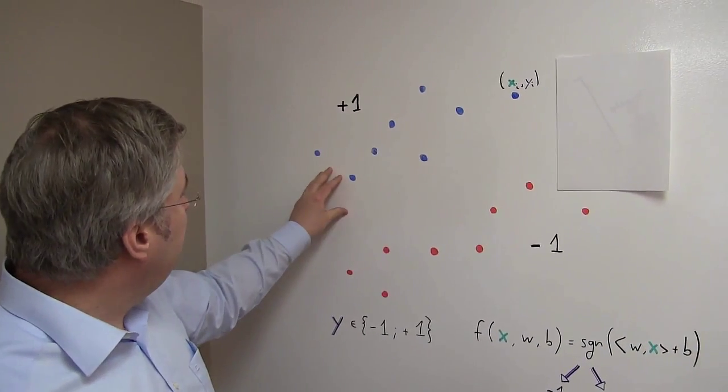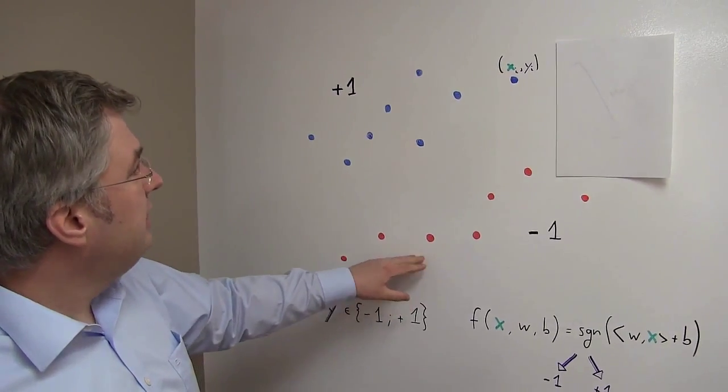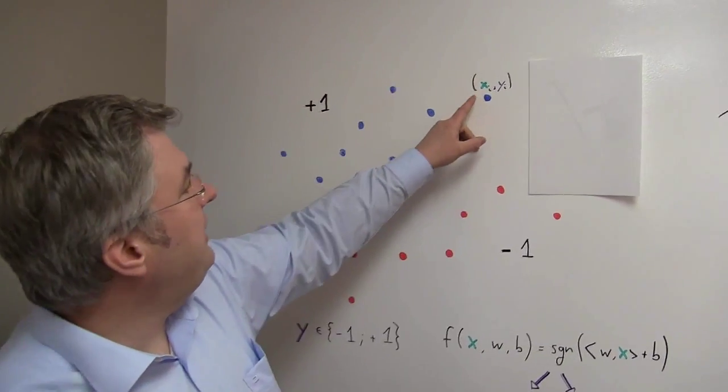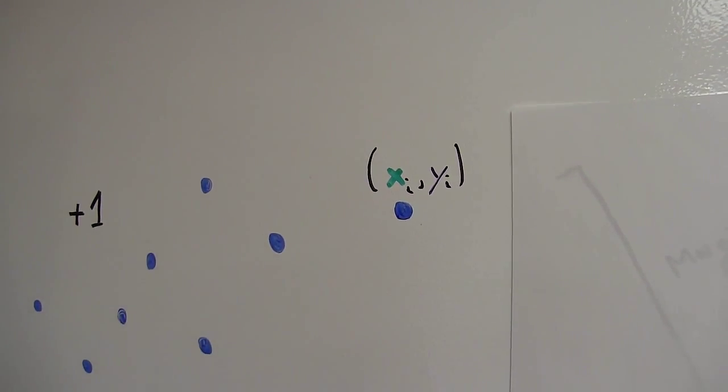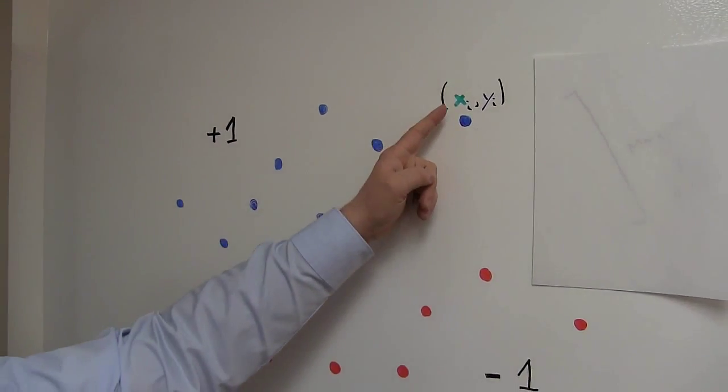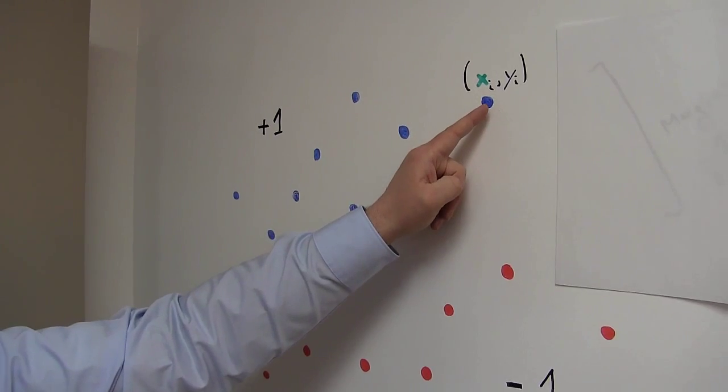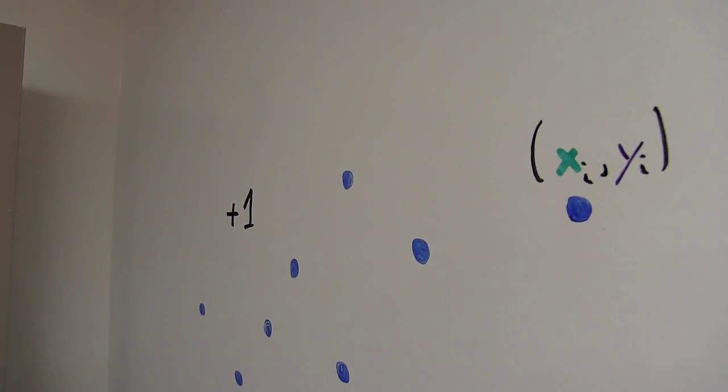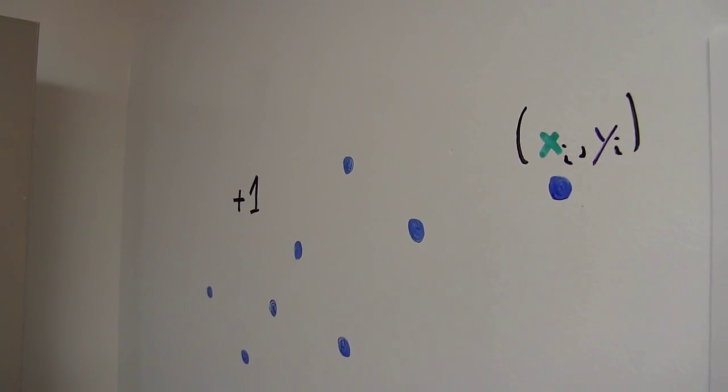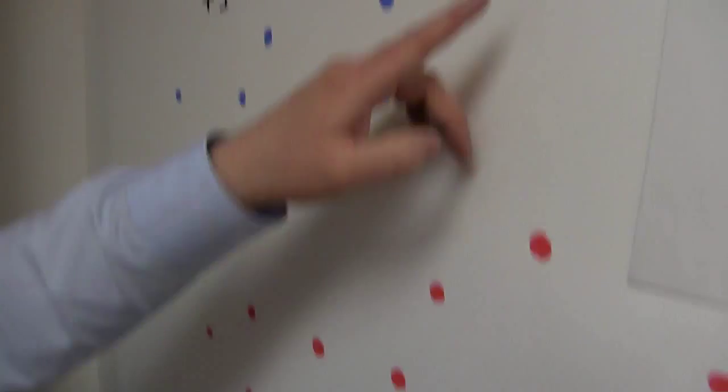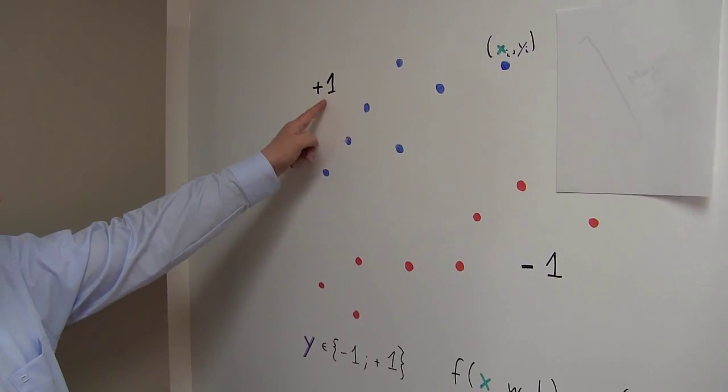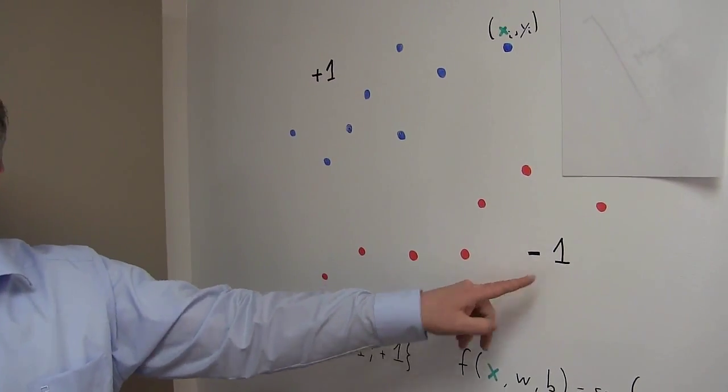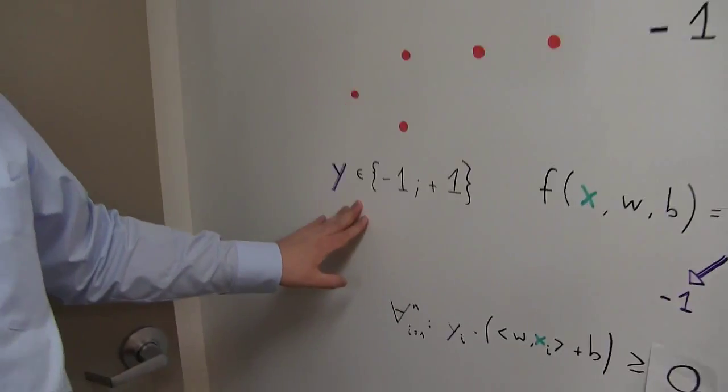We have those blue data points here, we have red data points. Every data point has a location in the space. So the location in space here is x, just like a vector in a two-dimensional space. If this is data point i, the location is xi. And every data point also has a class, blue or red. And this class I call y. Since I don't want to write blue and red all the time, I call the classes plus one and minus one. So those are the two classes.